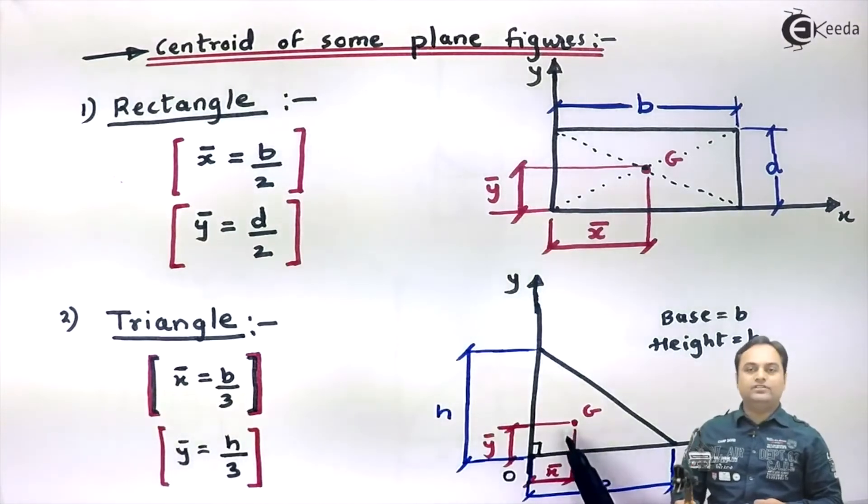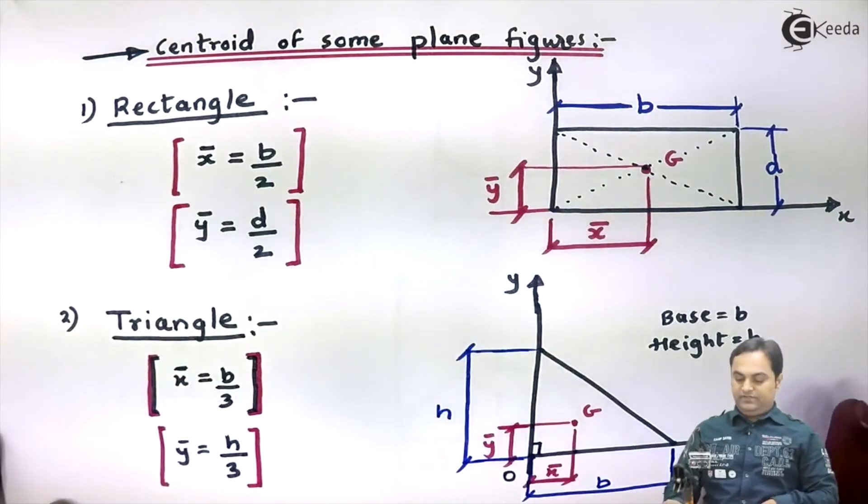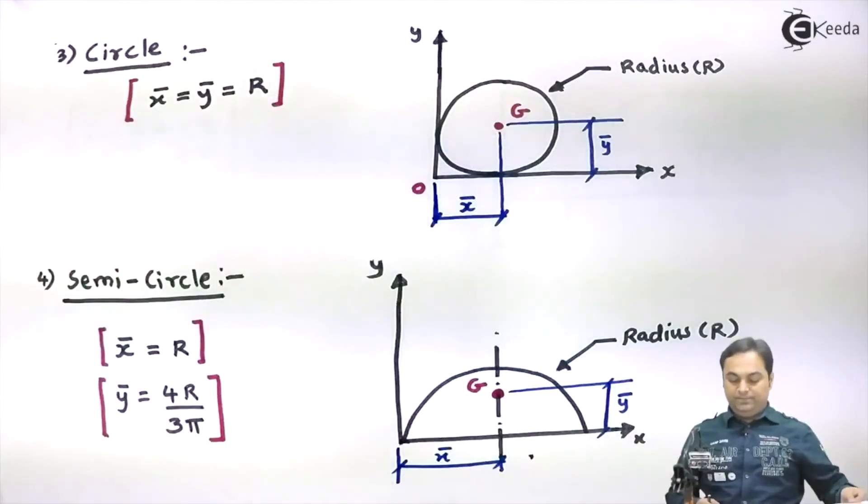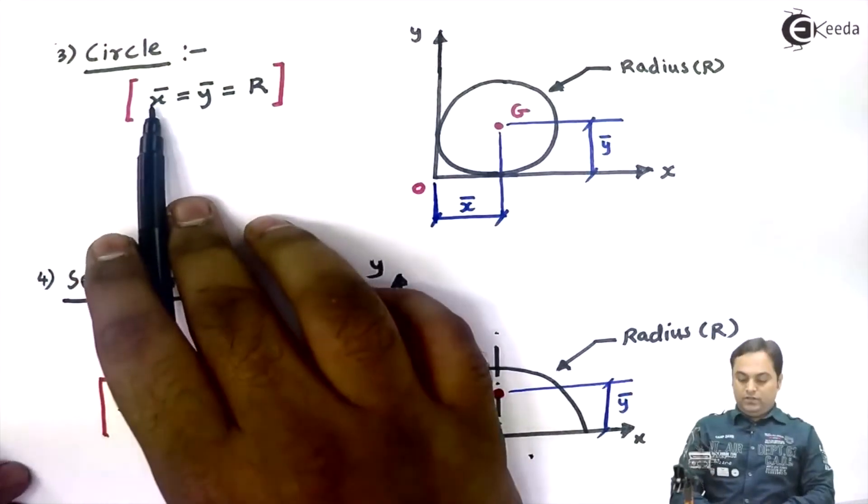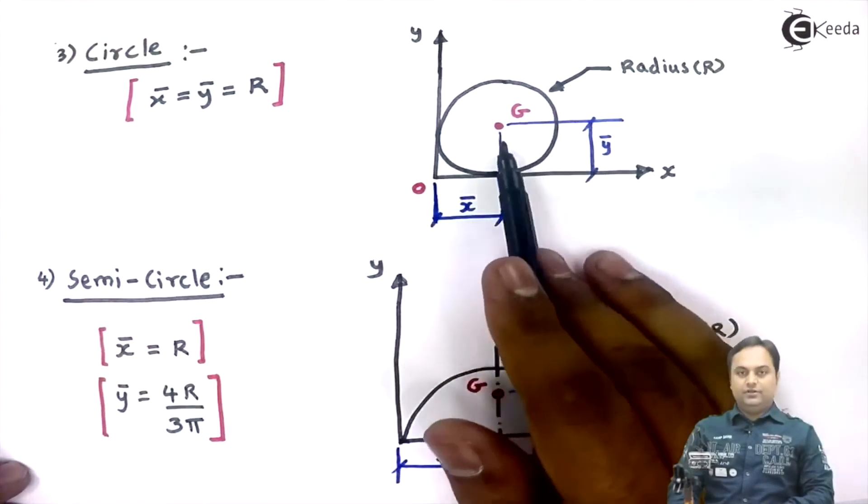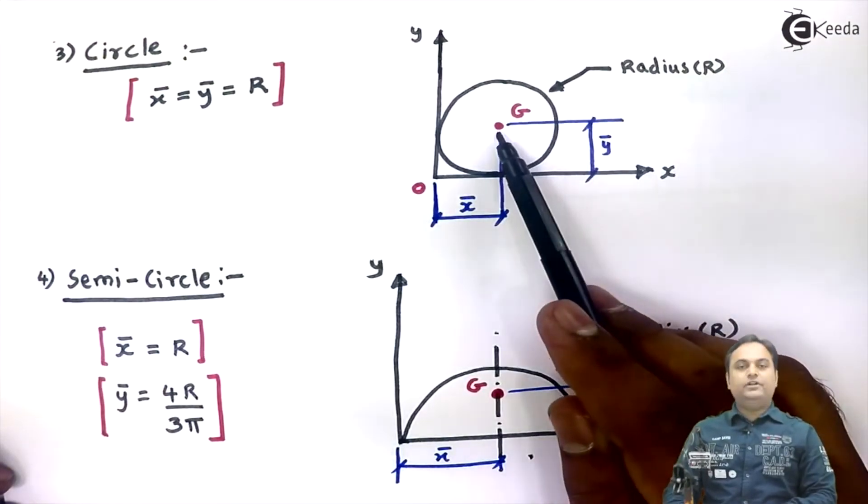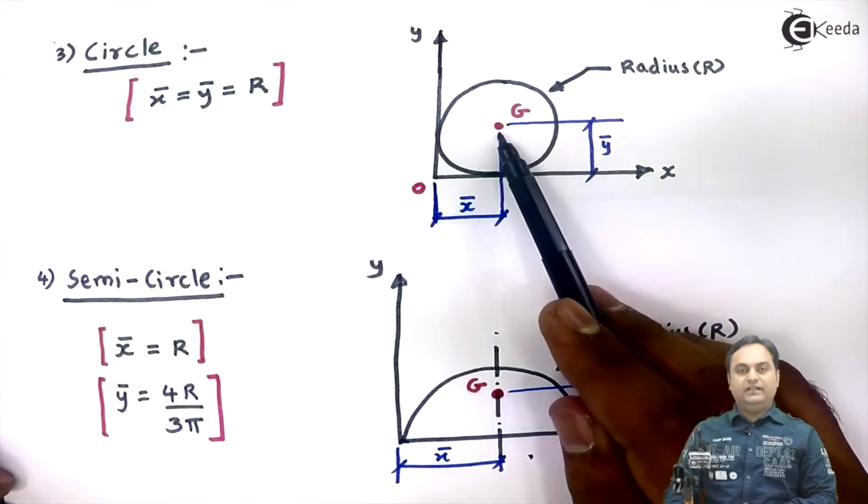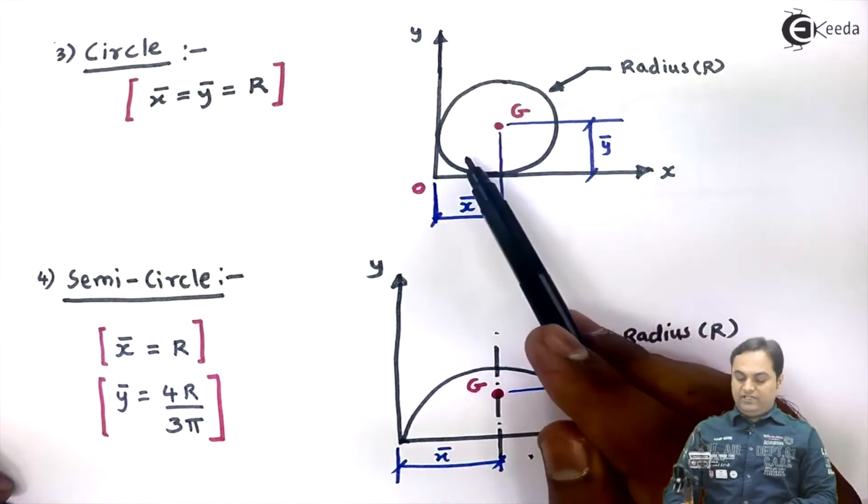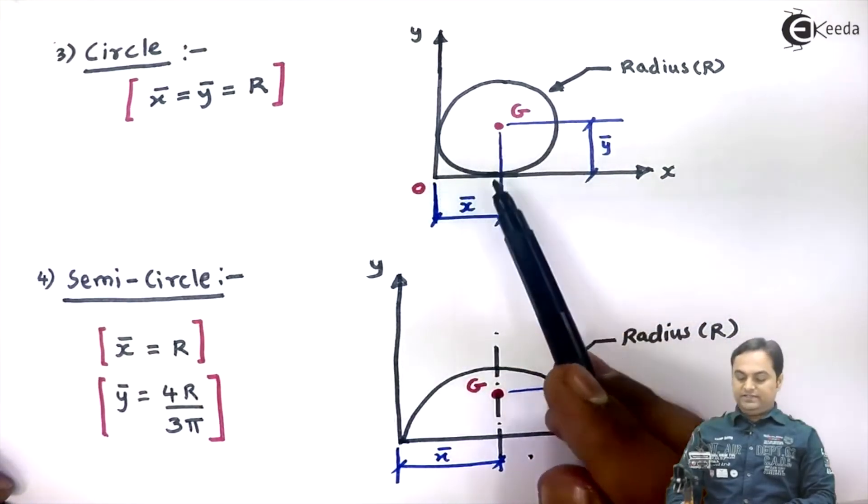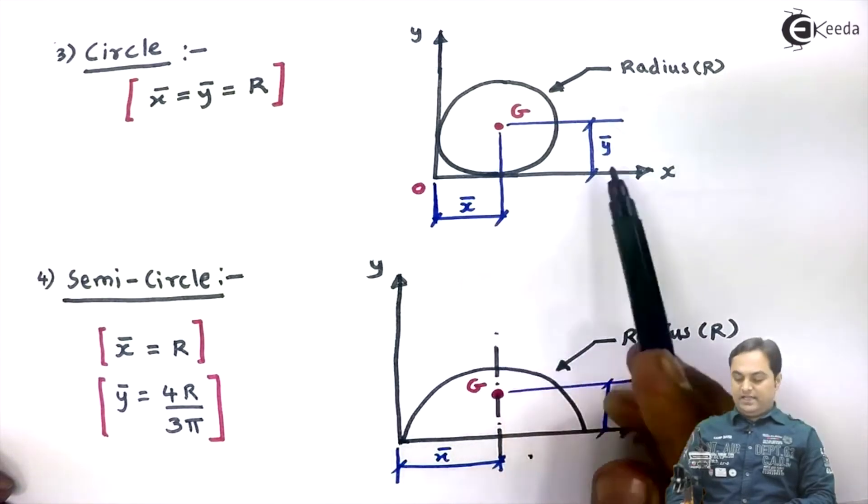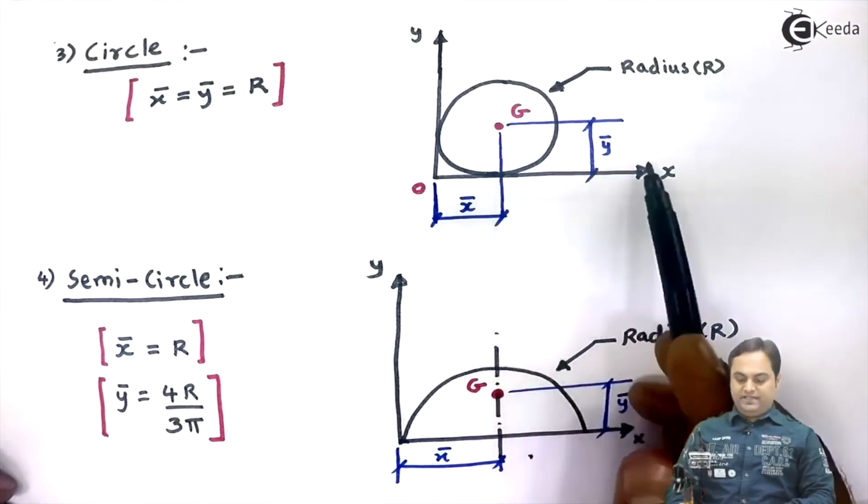So if we know x̄, ȳ for a triangle, we can locate the centroid. The next figure is a circle. Here I am considering a circle having radius R. Centroid for the circle will be at the center, and if we are keeping this circle at the origin, in that case x̄ and ȳ both values would be same.